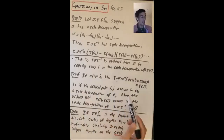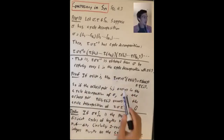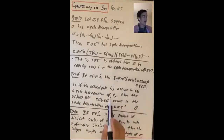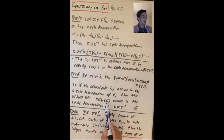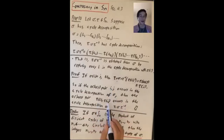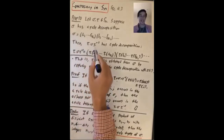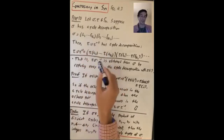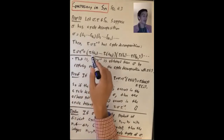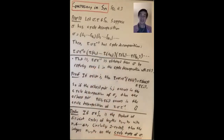That's basically the whole proof. If you have i then j in the cycle decomposition of σ, then τ(i) gets sent to τ(j) by τστ⁻¹. So if i follows j in σ's cycle decomposition, then τ(i) is followed by τ(j) in the cycle decomposition of τστ⁻¹. The cycle lengths don't change.